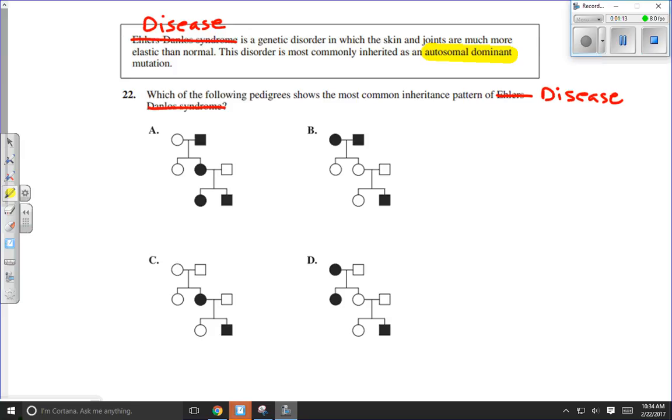Autosomal dominant. The reason that's important is that tells us the mode of inheritance. So there's certain things you should be looking for in a pedigree chart. So here we have four pedigree charts and we have to figure out, well, which one of these four pedigree charts is autosomal dominant?